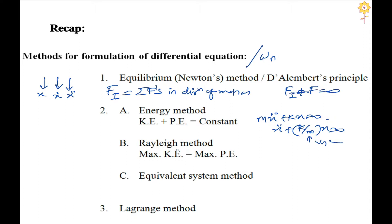In Rayleigh's method, we compare the energies at two positions: one at the equilibrium position and one at the extreme position. Because the total energy remains the same and only one form of energy is present at each extreme — the other being zero — we have maximum KE equal to maximum PE. From this we get k equal to m*omega_n squared, or essentially omega_n equals the square root of k over m.